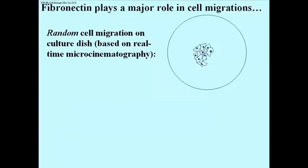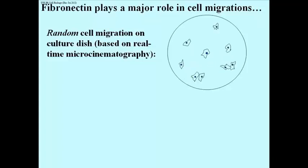If we take a bunch of cells and put them in a Petri dish in liquid, and allow the cells to settle onto the surface of this dish, you can take real-time cinematography and watch the cells move around in a random fashion.